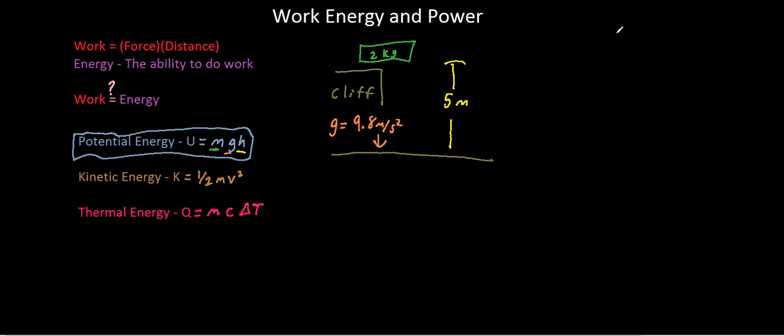So if this weight were to fall, it would accelerate at a rate of 9.8 meters per second squared due to gravity. So it's pretty simple. Potential energy equals mass times gravity times height, as we said.